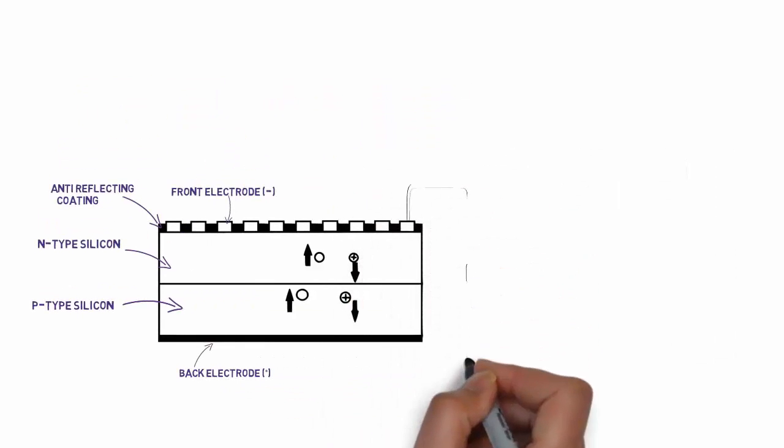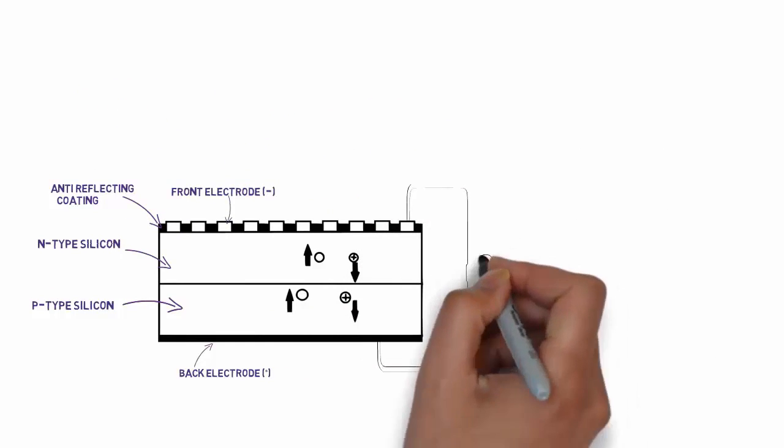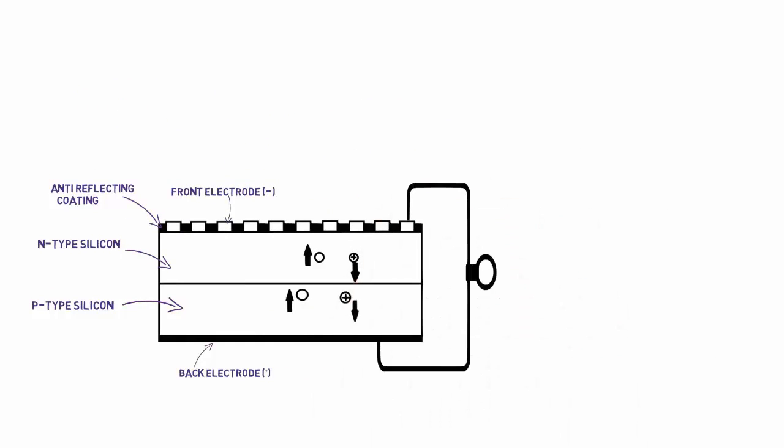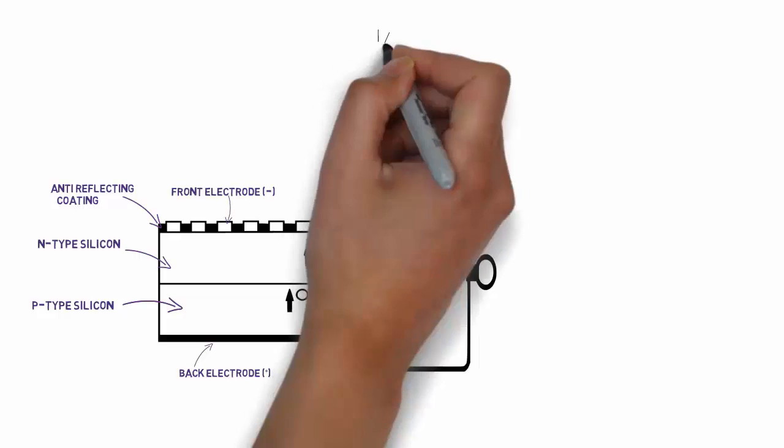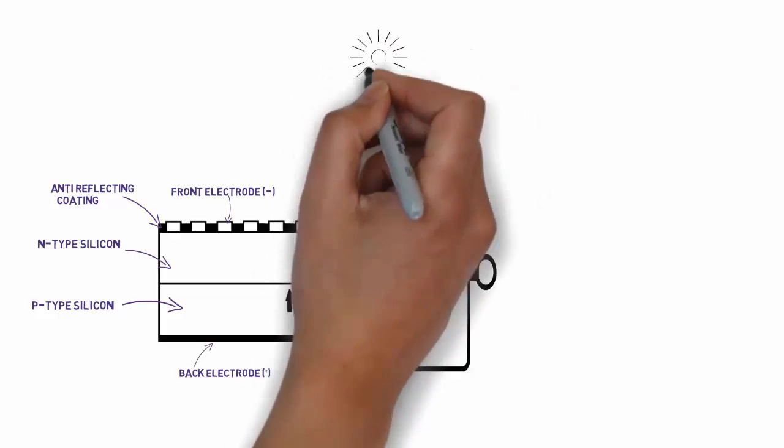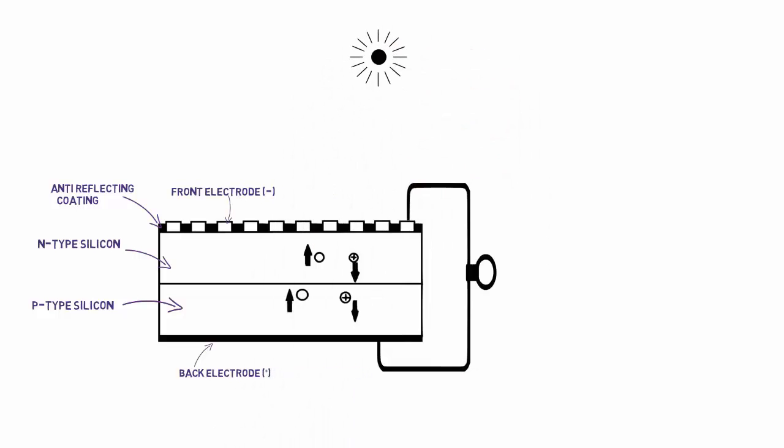When we connect the two terminals of this solar cell, then in the absence of proper light there will be no current. But as soon as we keep this cell under sunlight, there is bond breaking inside the solar cell which generates a large number of electrons and hole pairs. These electrons and holes will get accelerated towards cathode and anode respectively, and current starts flowing. We can use this current to charge a DC battery for storage purpose.